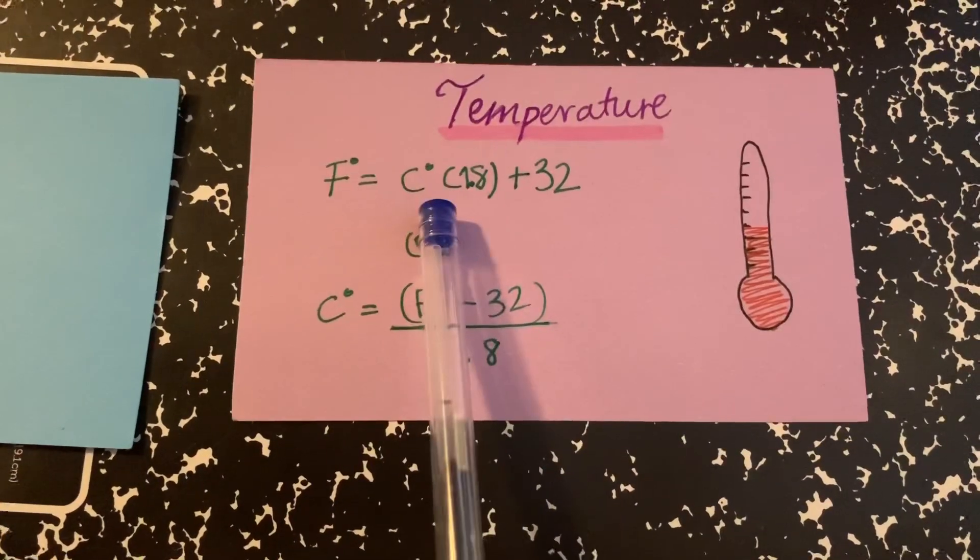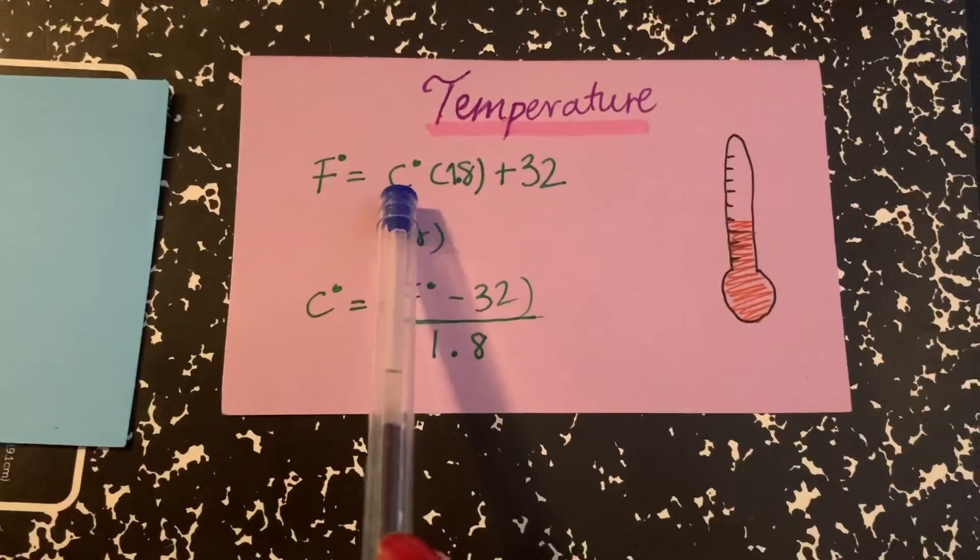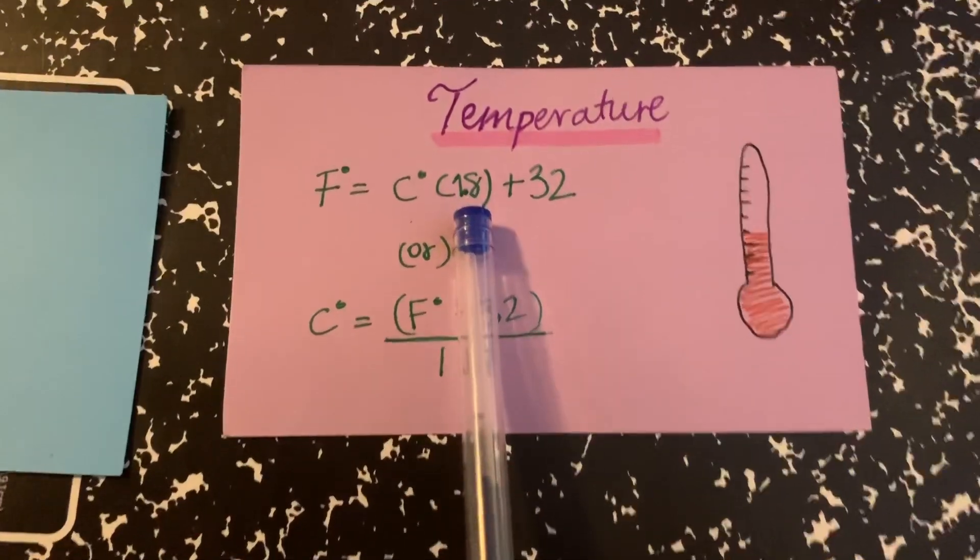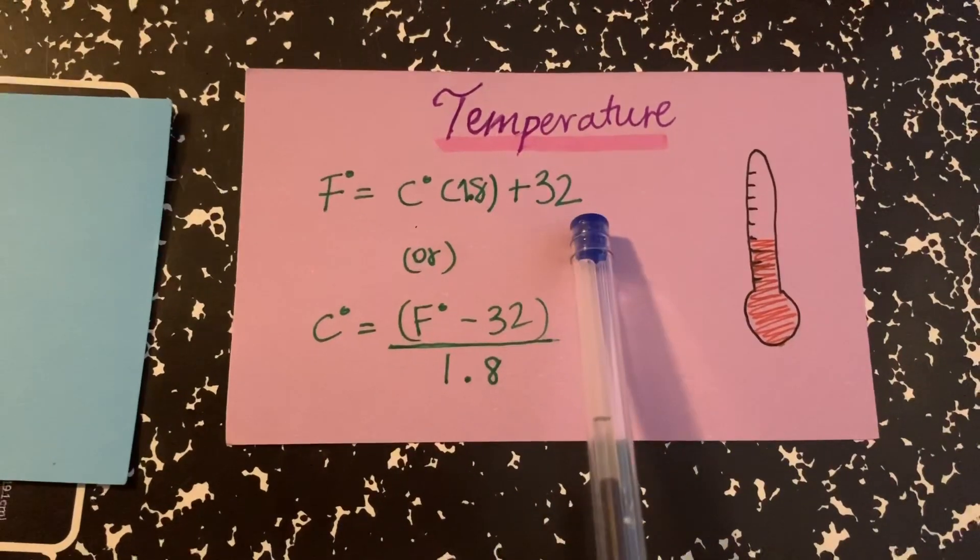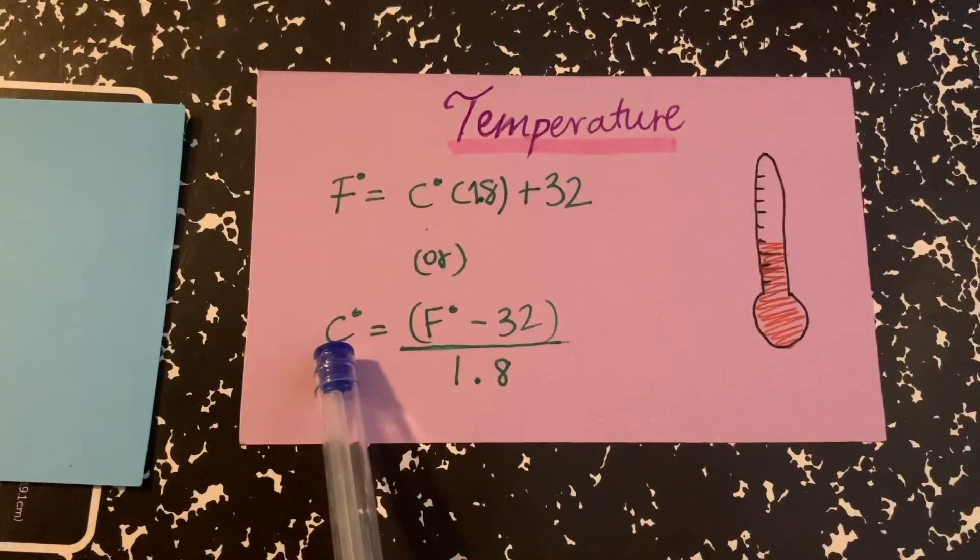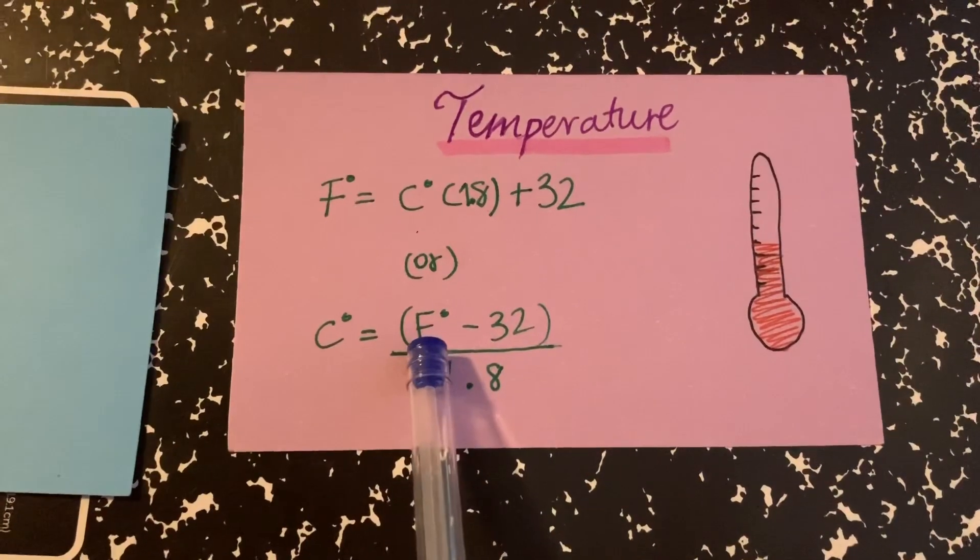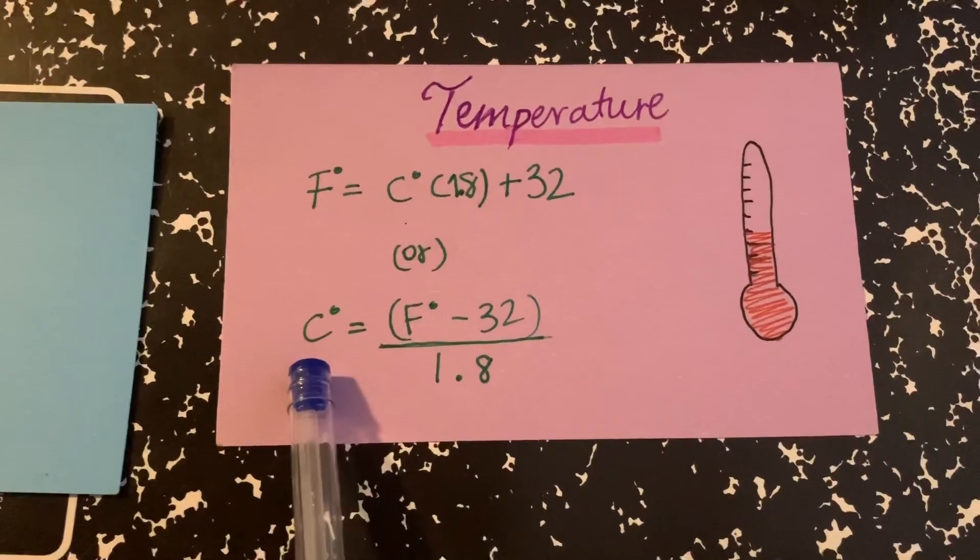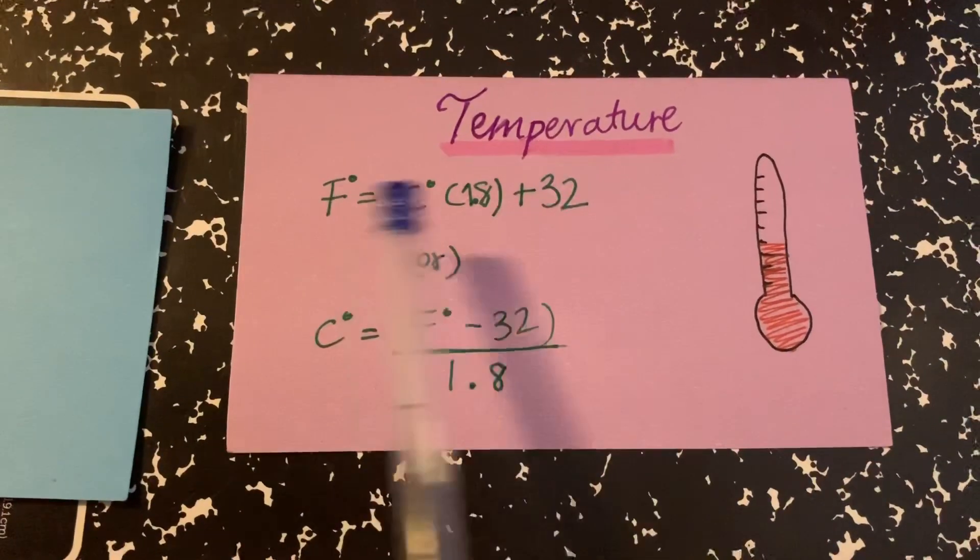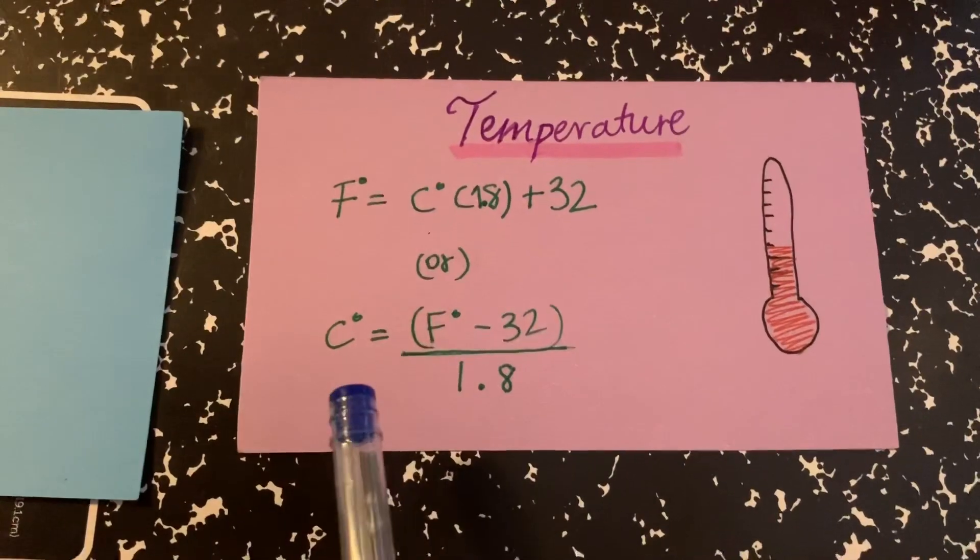So you put the temperature here, any temperature that they tell you in the problem, you multiply it by 1.8 and then you add 32. Now what if they give you Fahrenheit that you want to find out in centigrade? So what you do, you memorize only this equation and then you can rearrange it.